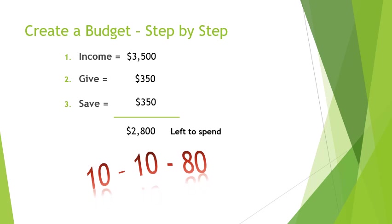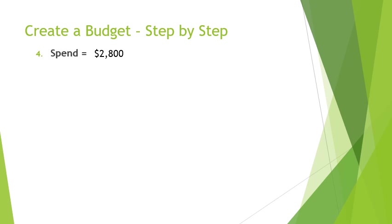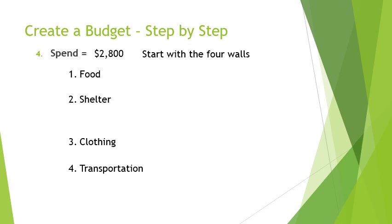So now we have $2,800 left to spend. How do we determine what we spend it on? The first step is to start with the four walls. What are the four walls? I define them as food, shelter, clothing, and transportation — the four necessities of life.